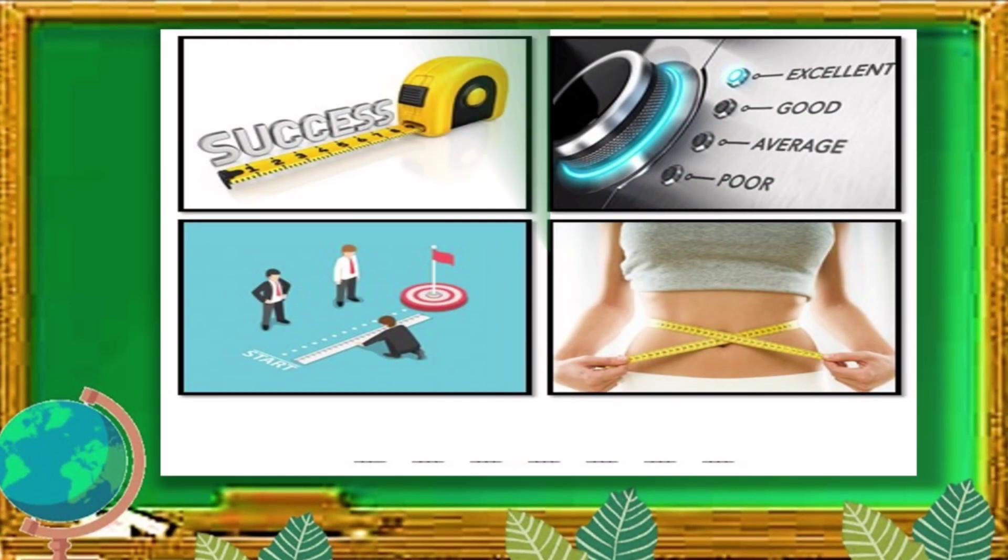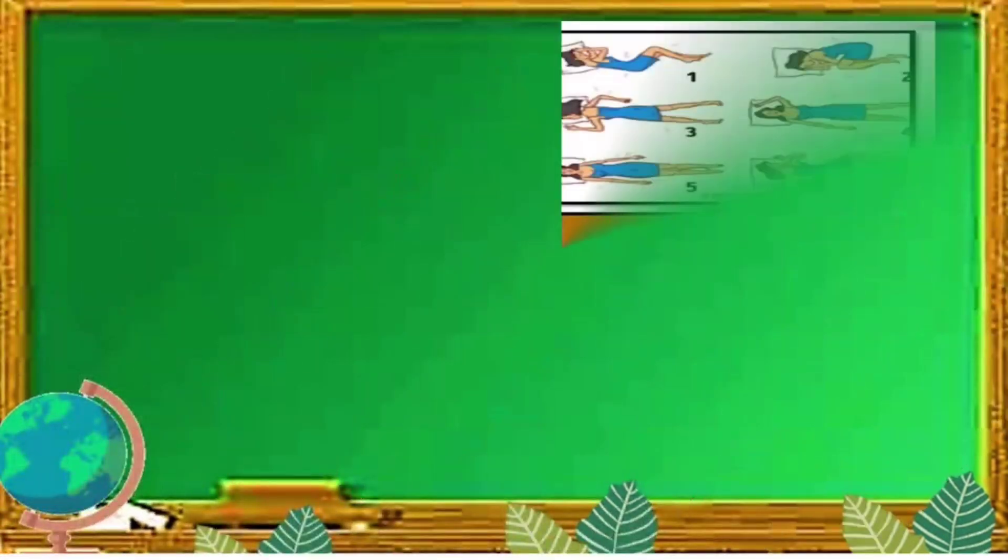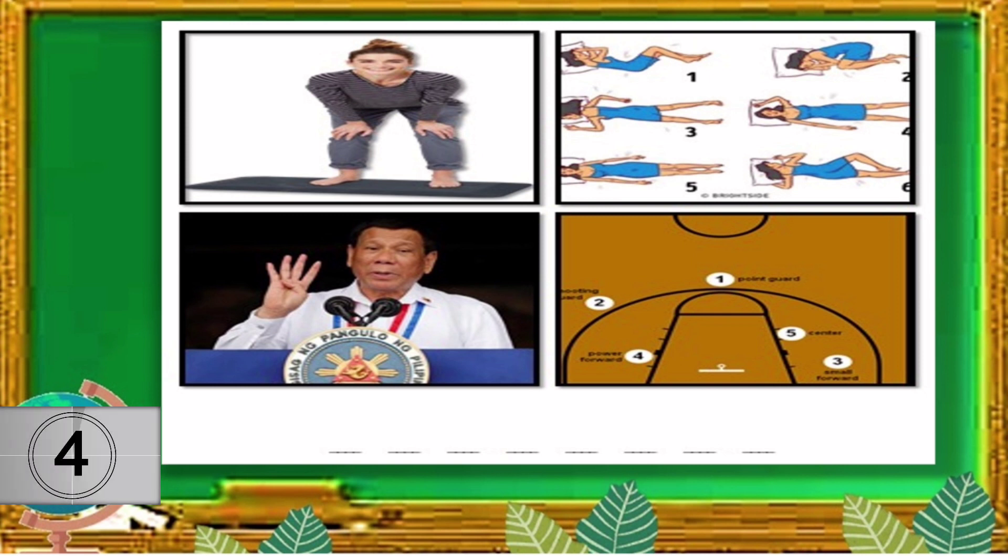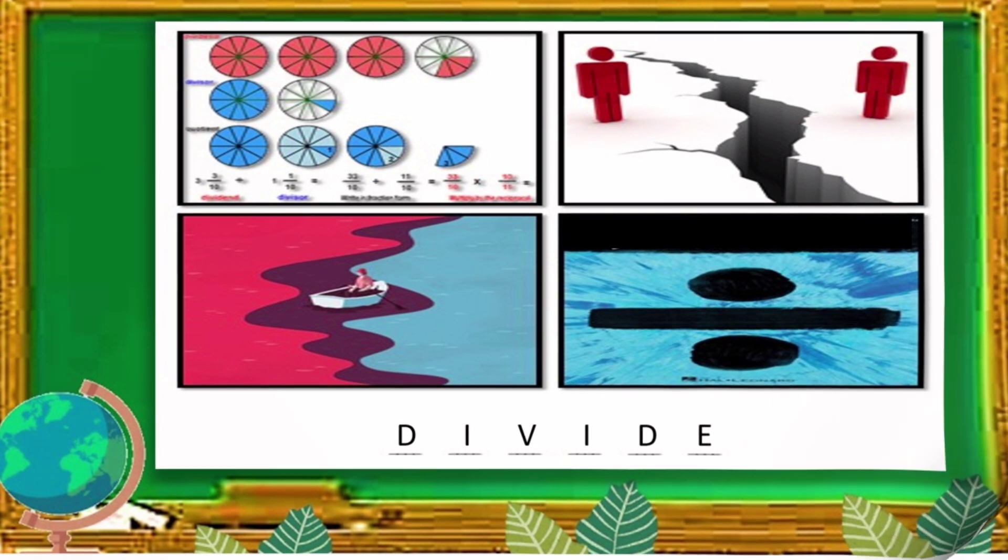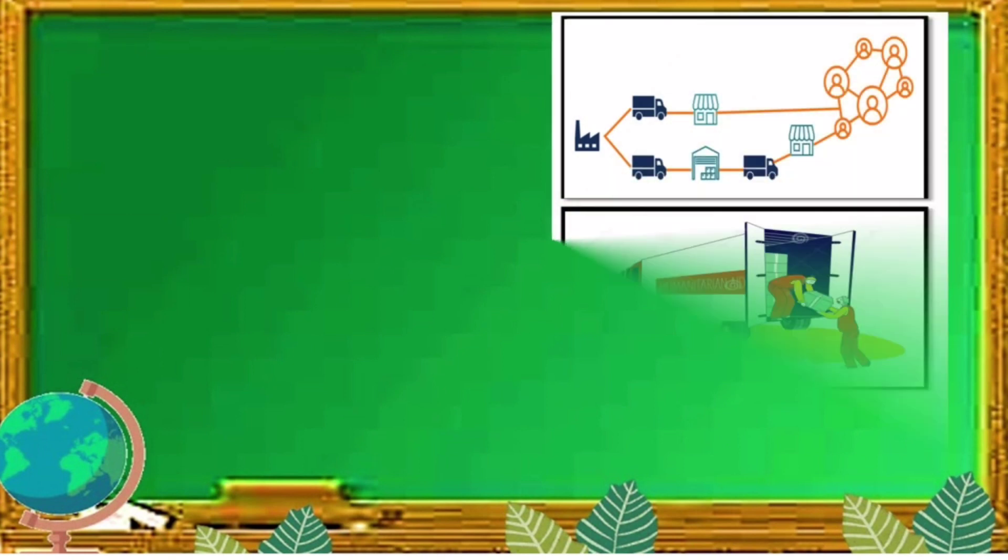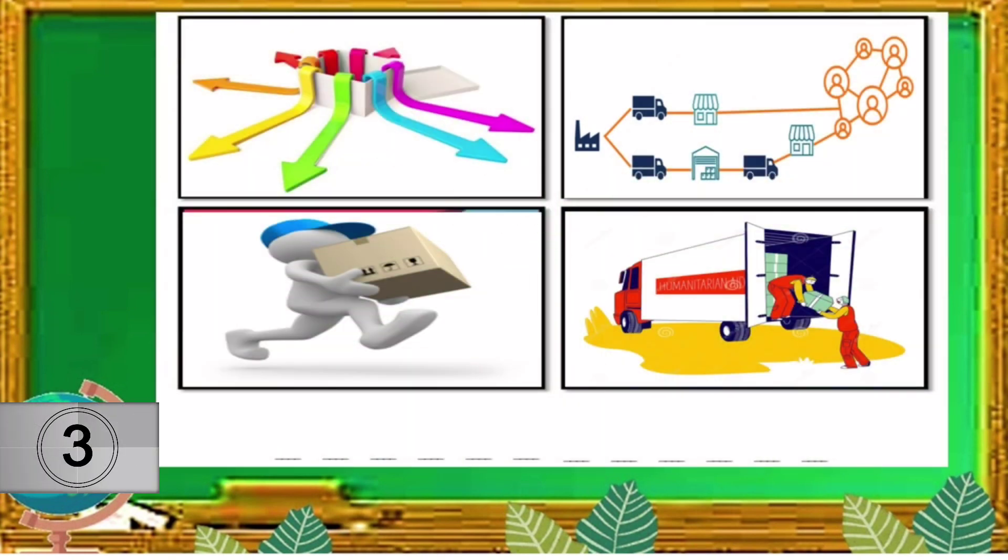For the first slide, what do you think is the answer? The answer is measure. How about for the second slide? The answer is position. Next is... The answer is divide. For the fourth one, the answer is distribution.